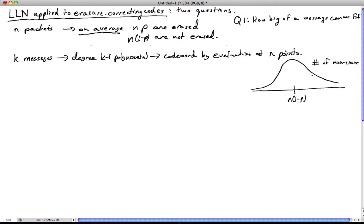So we have a histogram like this. So what are we interested in? What we're interested in is how big of a message can we fit? Namely, how many of these messages? What size k can we actually have?